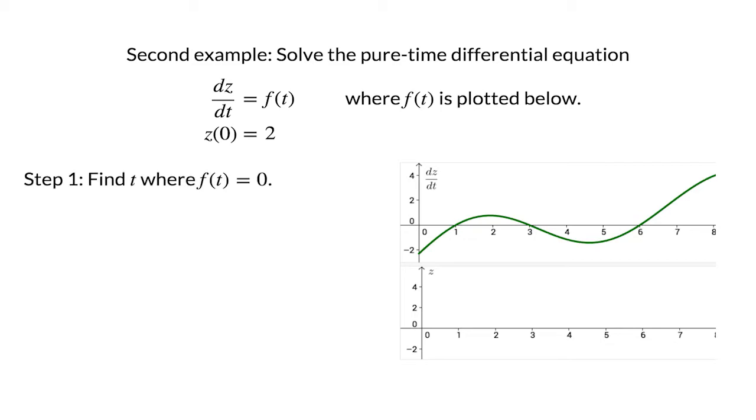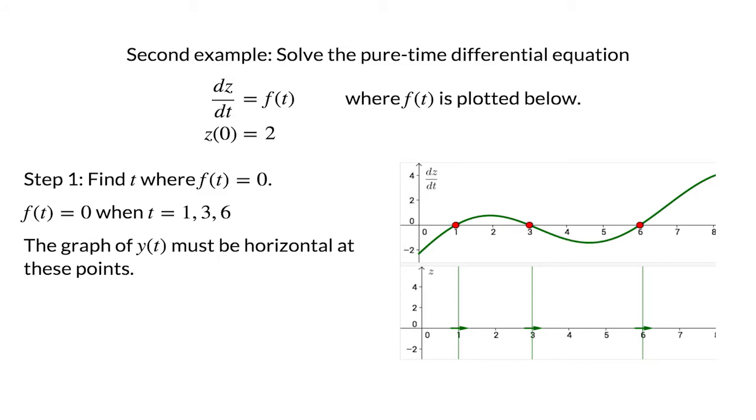For the first step, we'll find the times t where the derivative is zero. The derivative dz/dt is zero when t is 1, 3, and 6. From this observation, we know that the graph of the solution z(t) must be horizontal at these points.